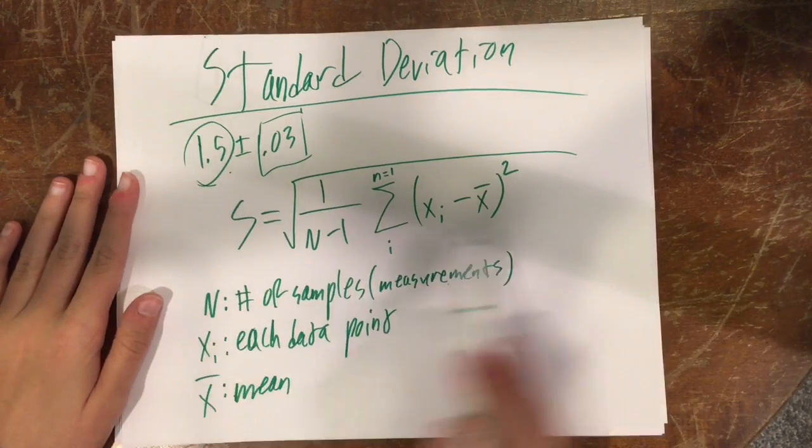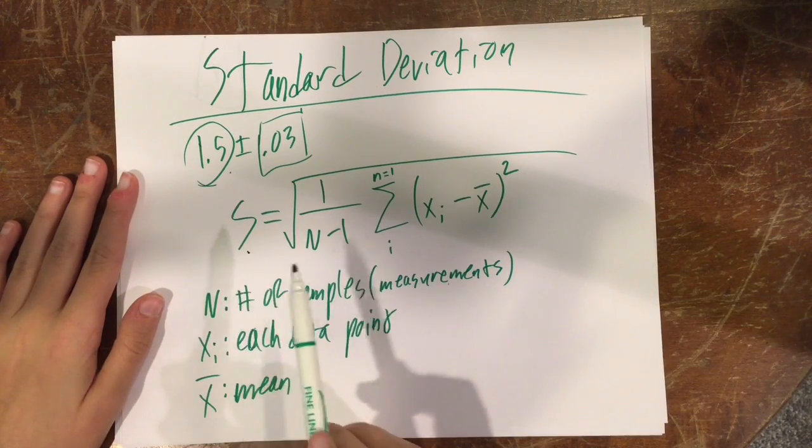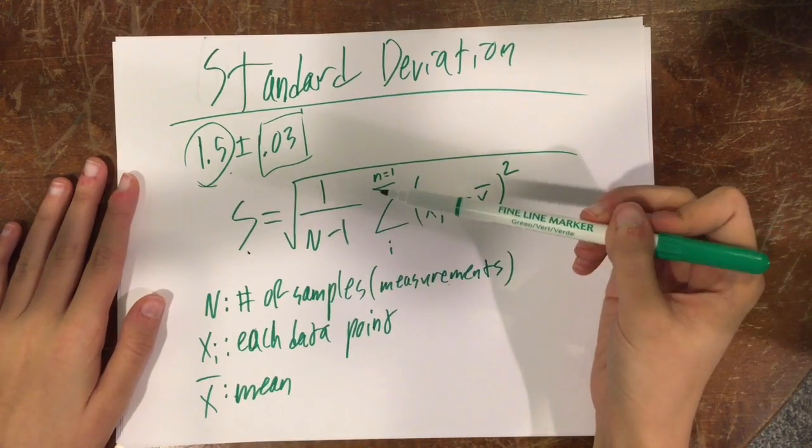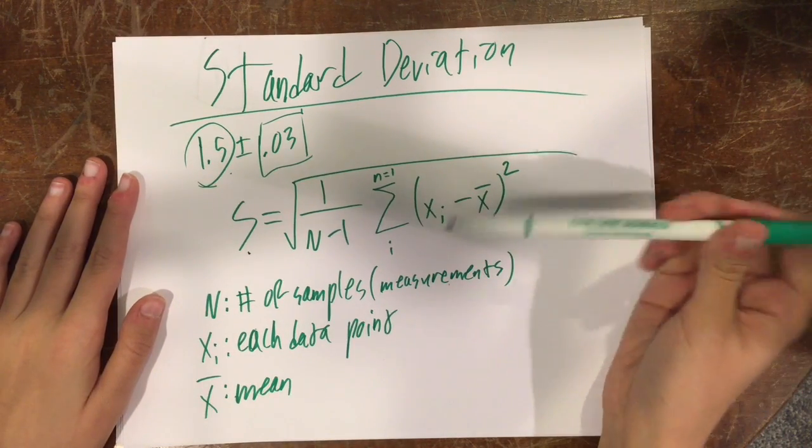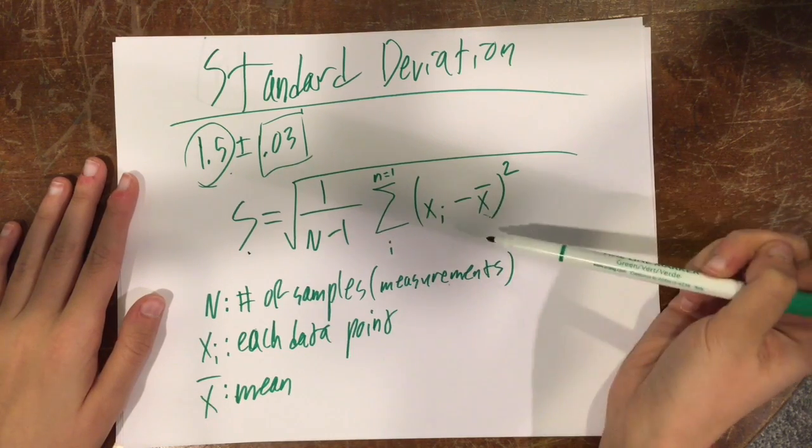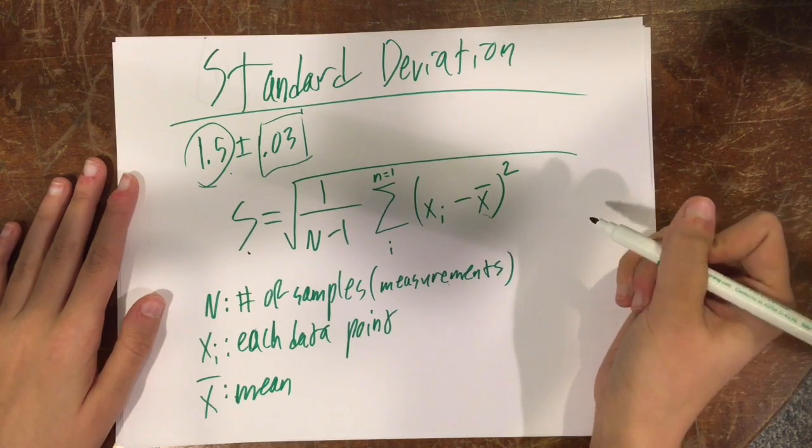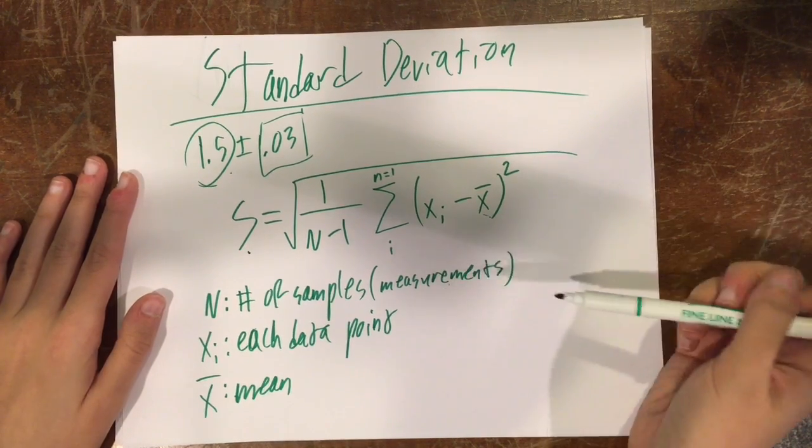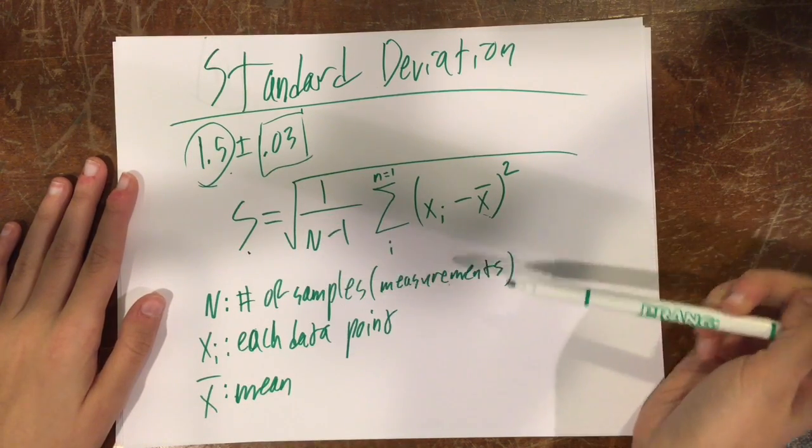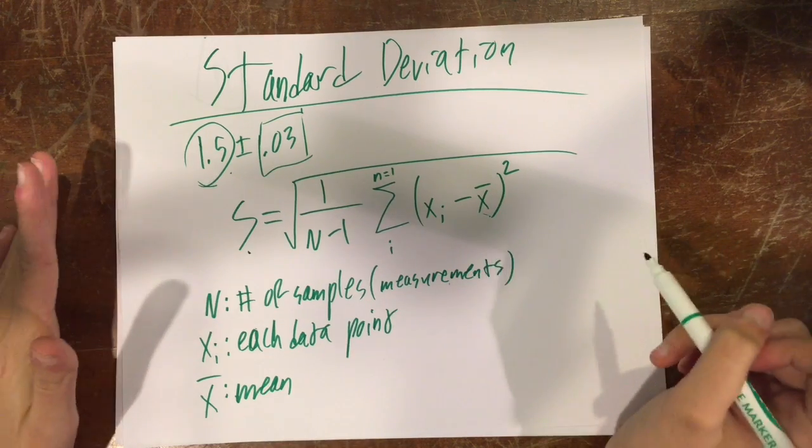So the formula for standard deviation looks like this. The S stands for standard deviation because this starts with an S and it's easy. And then this is the rest of it. The N and this thing are both new. The sigma and this little xi are not. So what these things mean, the N is your number of samples or measurements.